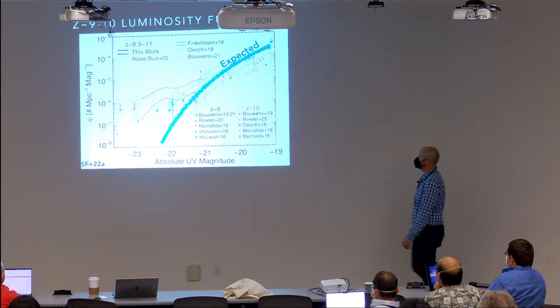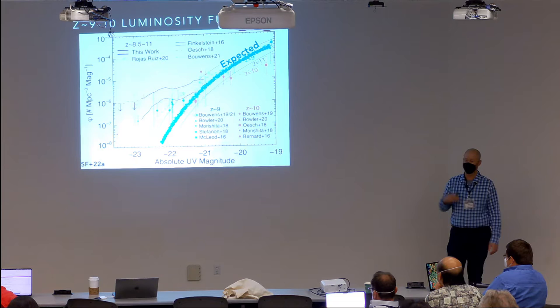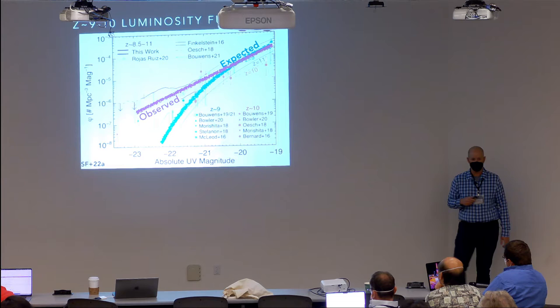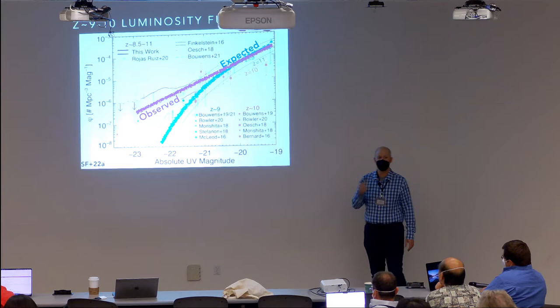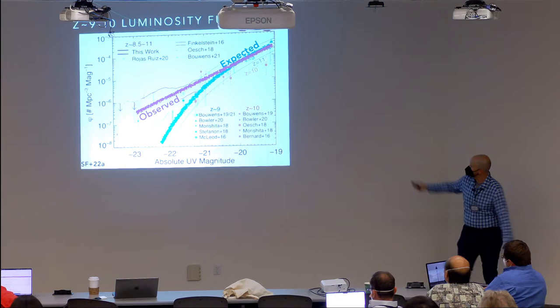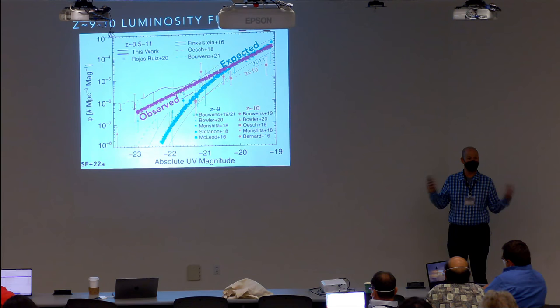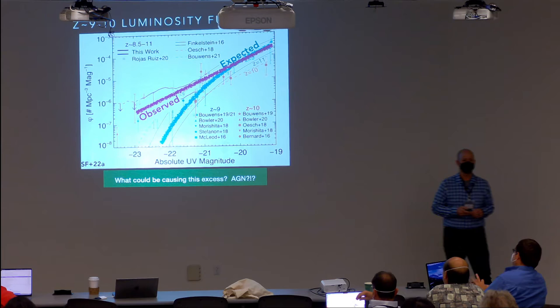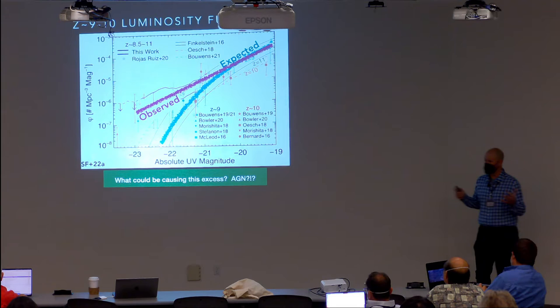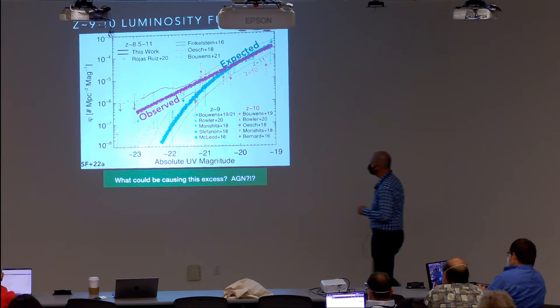Looking at the luminosity function evolution: broadly, the data is consistent with a smoothly evolving luminosity function extrapolated from redshift 4–8 out to redshift 9–10. The faint end seems mostly consistent, and there seem to be more bright redshift 9–10 galaxies than expected from a Schechter function. Adopting a double power law form seems favored. This raised the question: could we actually be seeing some early AGN in the early universe explaining these high number densities?